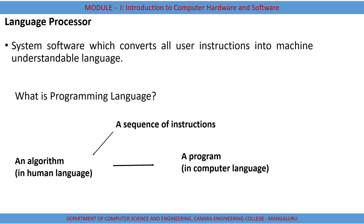Next we'll look at the language processor. A language processor is a system software which converts all user instructions into machine language or machine equivalent code. Whatever command we give to a computer, that command is converted to machine equivalent — and that is done through language processors.